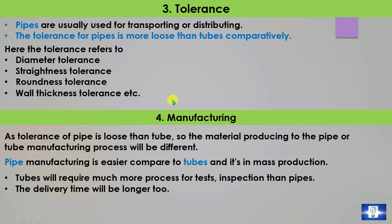Point 4: Manufacturing. Since the tolerance of pipe is looser than tube, the manufacturing process for pipe and tube will be different. Pipe manufacturing is easier compared to tube and is done in mass production. Tubes require much more process, tests, and inspection than pipes, and for this reason the delivery time will be longer too.